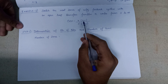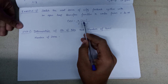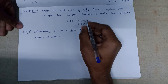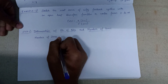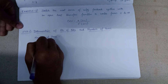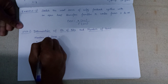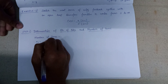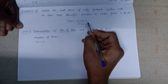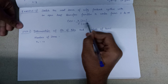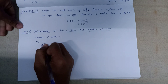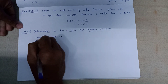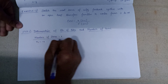On equating the numerator part to zero, we get our first zero at s = -1. There are no other terms in the numerator, so the number of zeros is exactly equal to one.